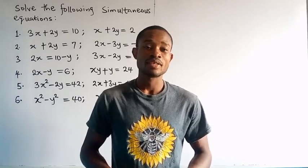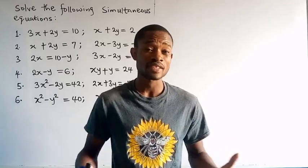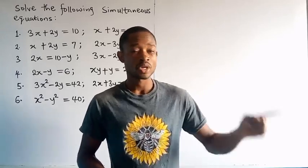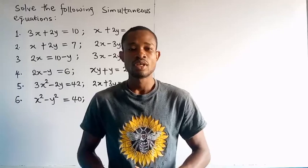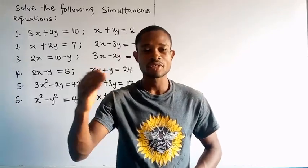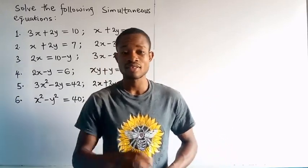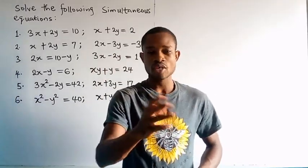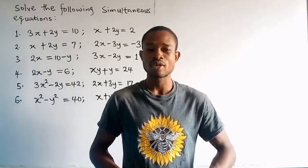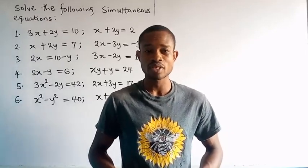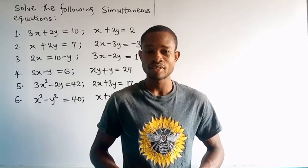In Mathematics, there are three major equations that have been identified: linear equations, quadratic equations, and simultaneous equations. In my previous video lessons, I treated the concept of quadratic equations, explaining how to use factorization and the completing-the-square method to obtain your answer.